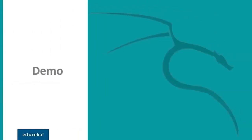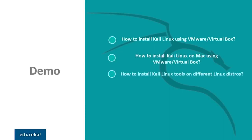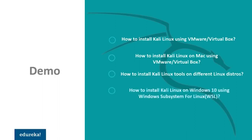As for the demo part, we'll be doing four installations here. First, we'll see how to install Kali Linux using VMware on a Windows operating system. Then we'll see how to install Kali Linux on Mac using VirtualBox. Moving on, we'll see how to install Kali Linux tools on different Linux distributions — I'll be showing how to install it on Ubuntu, but the procedure is the same for every other Linux distribution. And lastly, we'll see how to install Kali Linux on Windows 10 using the Windows Subsystem for Linux. I hope it's clear what we'll be learning in this session.